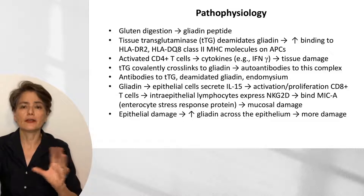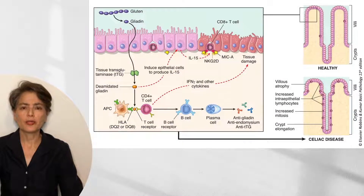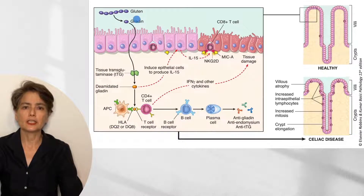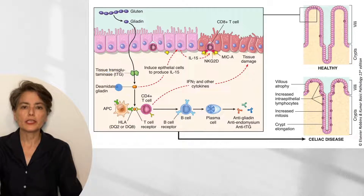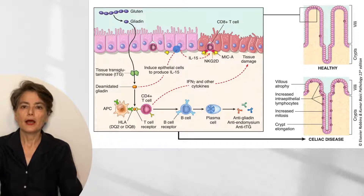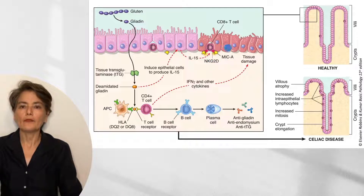Let's look at a figure from the 11th edition of Robbins and Kumar Basic Pathology. Gluten is consumed and digested as far as possible into gliadin, with the largest load in the duodenum. It crosses the epithelium where tissue transglutaminase deamidates it. This deamidated gliadin induces epithelial cells to produce IL-15, which stimulates CD8-positive T-cells expressing NKG2D to bind MICA on stressed enterocytes and start killing them.